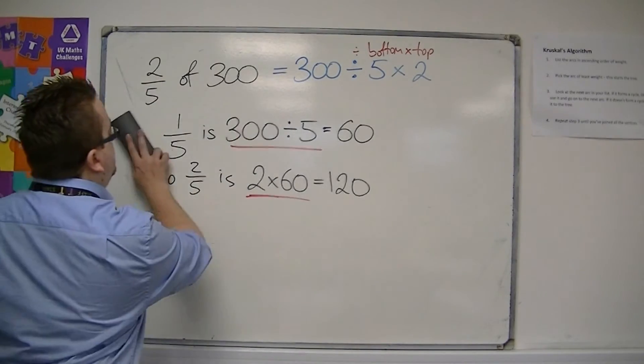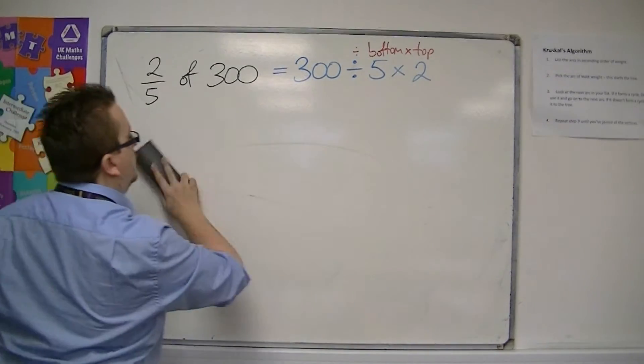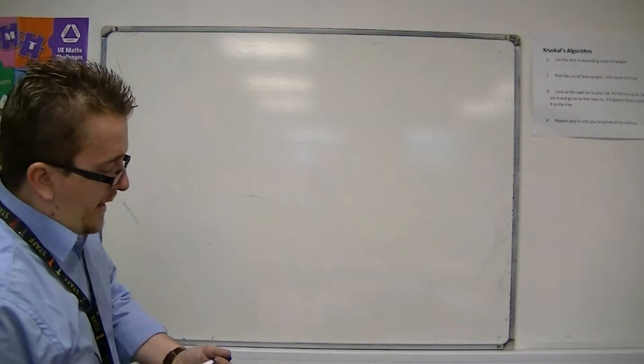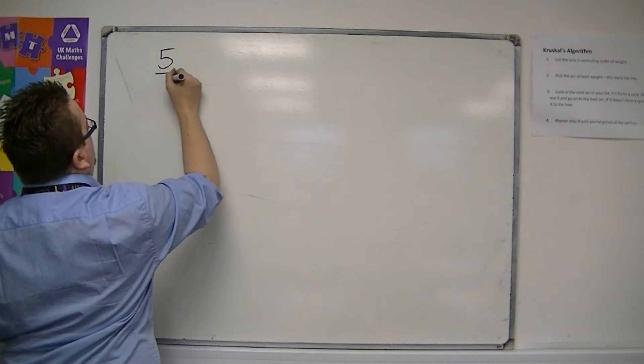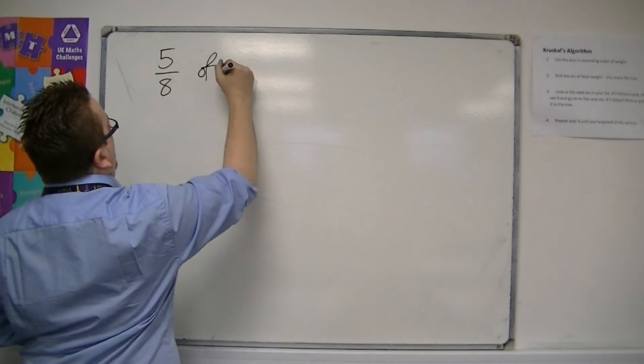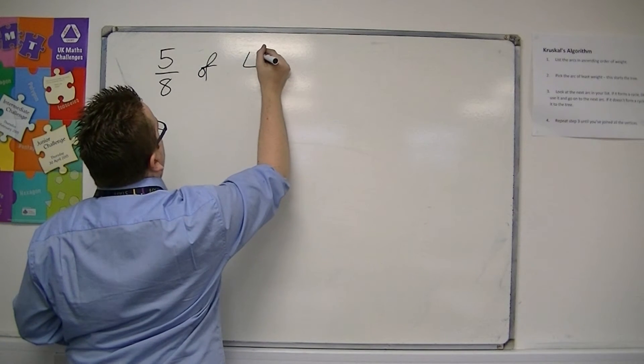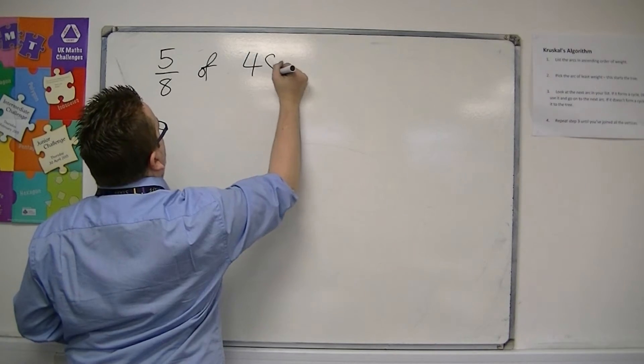Let's go through another example. So let's say we have something like five-eighths of 48.